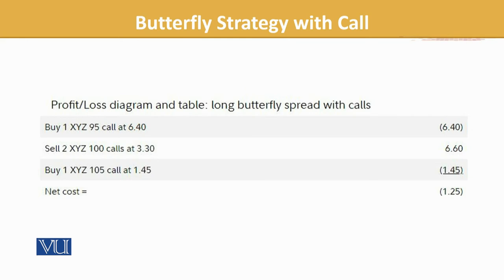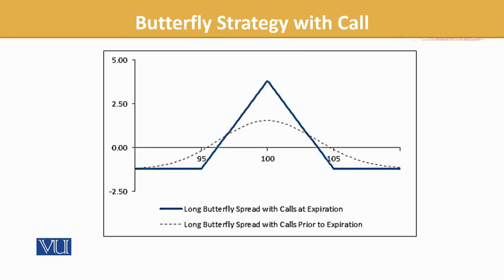Profit and loss diagram and table — long butterfly spread. Buy X humne jo kiya 6.4, humne jo receive hua aur humne jo buy kiya 1.45 pe — to net jo humari cost aai woh 1.25. So we can see from the diagram ke long butterfly spread with calls at expiration — jo blue line humein reflect karti hai — maximum jo hum is mein se gain kar sakte hain woh center point pe ho raha hai, yani 100 ke level pe highest hai. Aur jaise jaise dono taraf se deviate karega — upar ya neeche — tab humein loss hoga. But if it's at the center, we will be gaining maximum out of it.